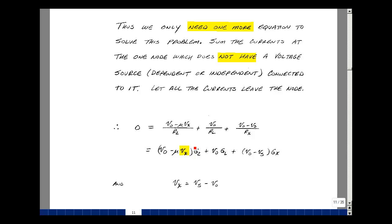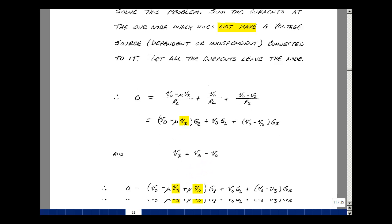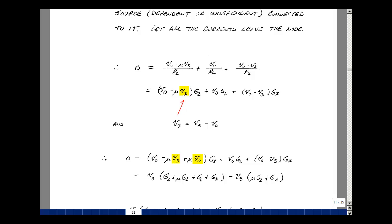So here's that equation. Let's just take the reciprocal of this as G2, G sub L, and G sub X. And here's our second constraint that V sub X is V sub S minus Vout. So I can substitute in more V sub X right over here. So here's a Vout. And then minus mu times this would be minus mu times V sub S. And then minus mu times a minus Vout. And then the other terms just come back down over here.